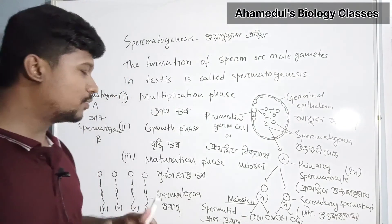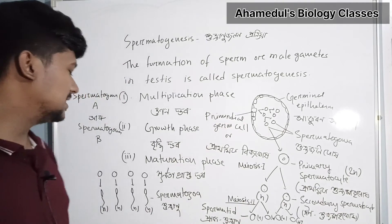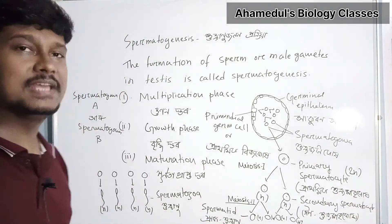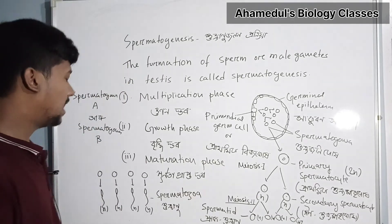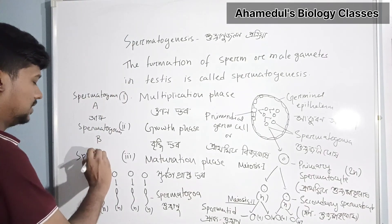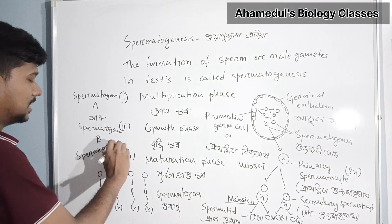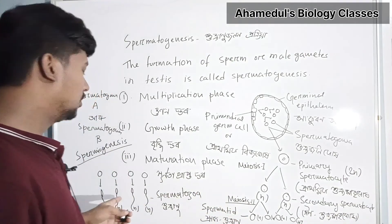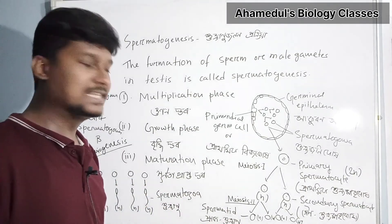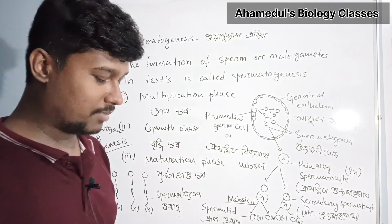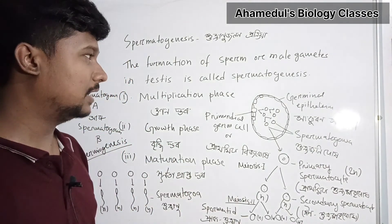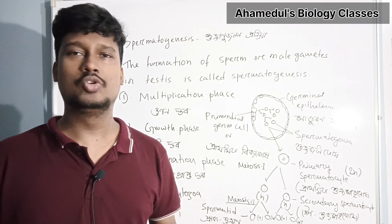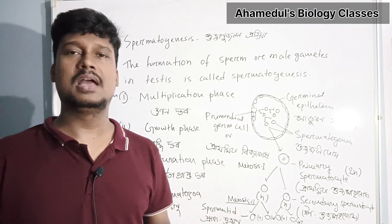The process of conversion of a spermatid into a mature sperm is called Spermiogenesis. Spermiogenesis is the final step of spermatogenesis. The next class will cover Hukranu Zanon Procria further, including the hormonal control of this process. Thank you.